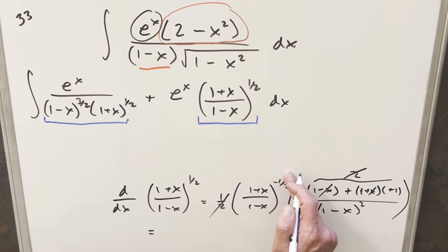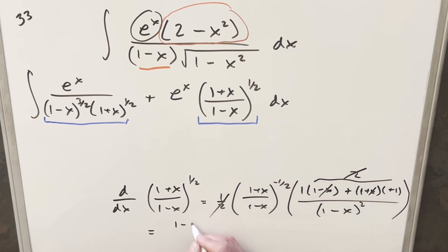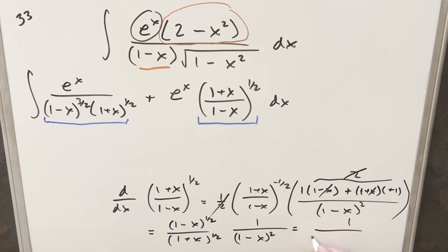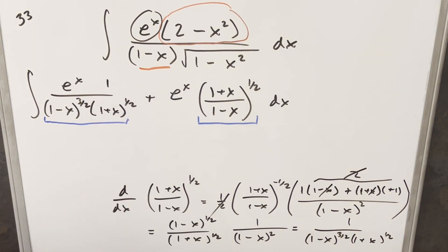Simplifying this: first, this is a minus exponent so what I can do is flip it — this is 1 minus x to the 1 half over 1 plus x to the 1 half. Then for this part, this just becomes 1 over 1 minus x squared. What I can do is divide this into this, and what we end up with is 1 minus x to the 3 halves, and 1 plus x to the 1 half over here. If I create a 1 right there, what you notice is this thing here is exactly the same as what we have in our integral.